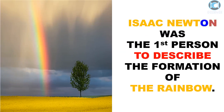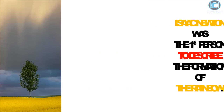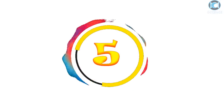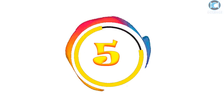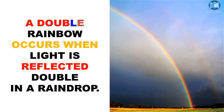Isaac Newton was the first person to describe the formation of the rainbow. A double rainbow occurs when light is reflected double in a rain drop.